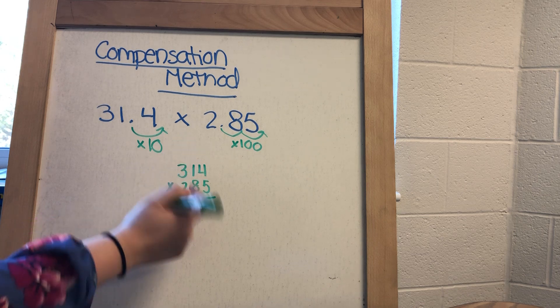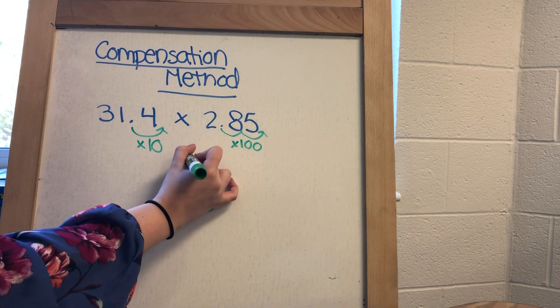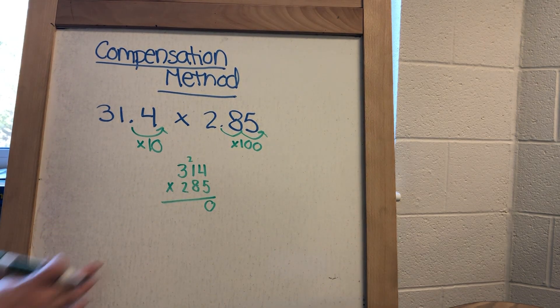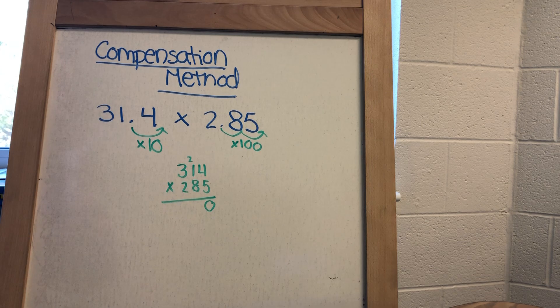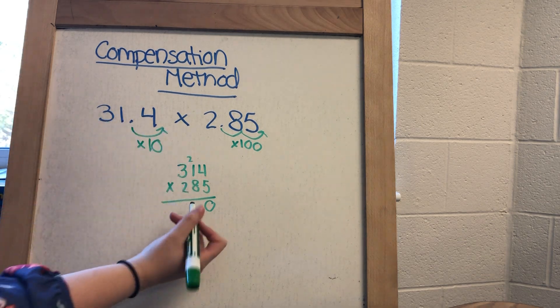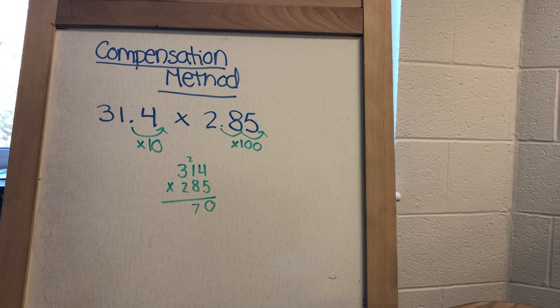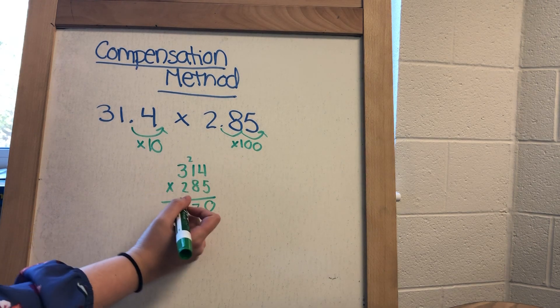So I'm going to do 5 times 4, which is 20, carry my 2. 5 times 1 is 5, plus 2 is 7. And then 5 times 3 is 15.